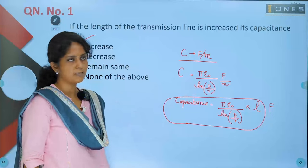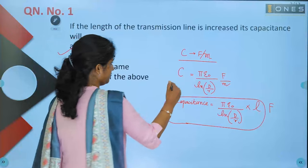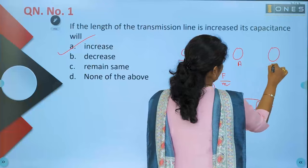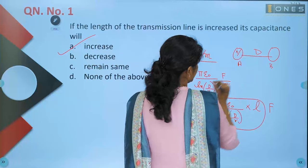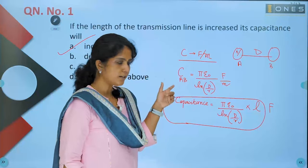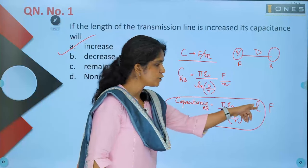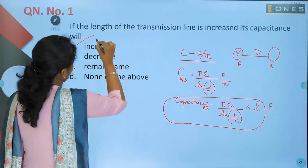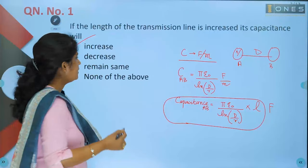The basic formula gives capacitance as farad per meter. For conductors A and B, if the spacing between the conductors is d and the radius of each conductor is r, then capacitance per unit length = pi epsilon zero divided by ln(d/r) farad per meter. The total capacitance C_AB = pi epsilon zero divided by ln(d/r) multiplied by L, the length of the transmission line, in farads. So obviously, capacitance will increase if you increase the length of the transmission line, because it is directly proportional.